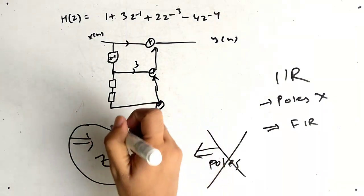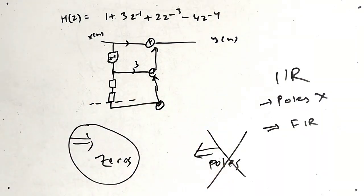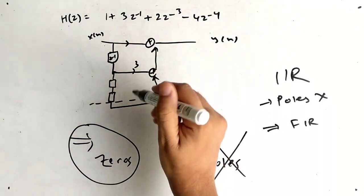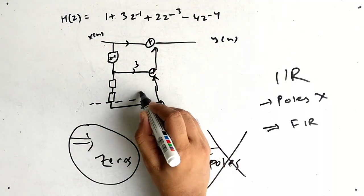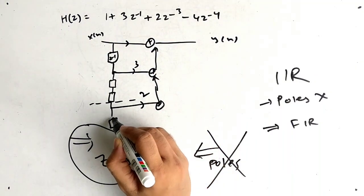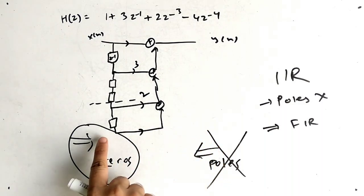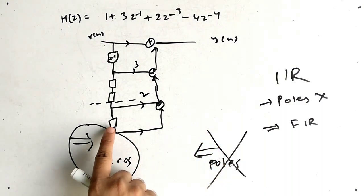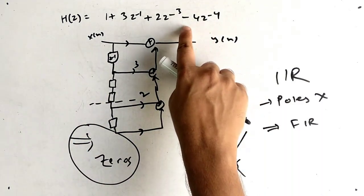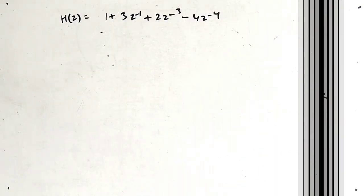Here we get the z⁻³ term, and for z⁻³ the multiplier is 2, so 2 remains as is. The last delay is z⁻⁴, and the multiplier for that is −4.